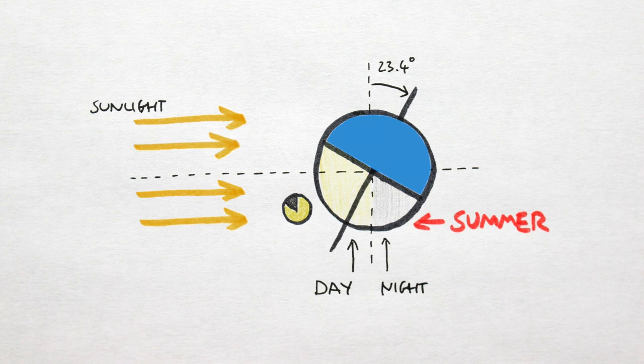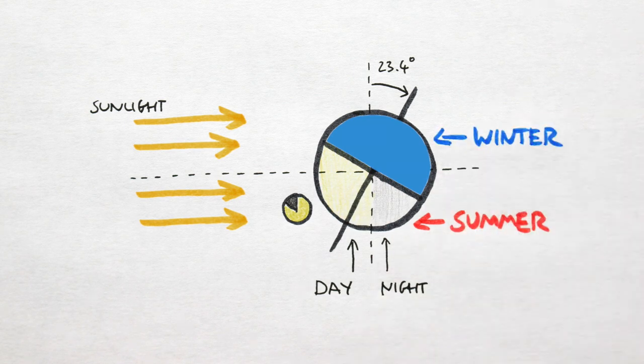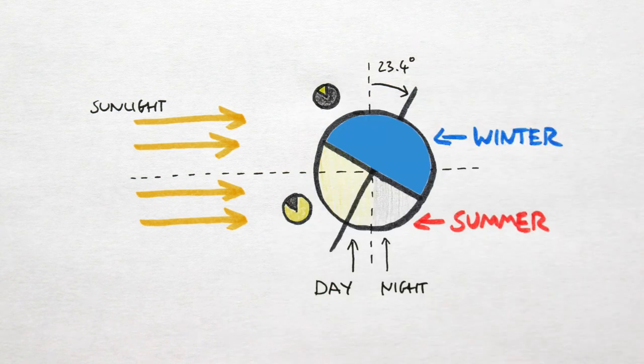Simultaneously, the other hemisphere receives less direct sunlight, making it winter there. Temperatures are cooler, days are shorter, and nights longer.